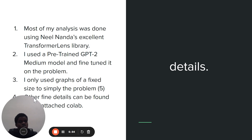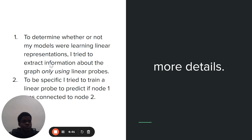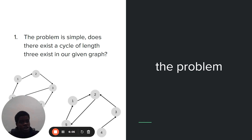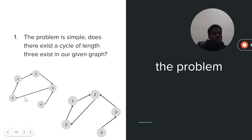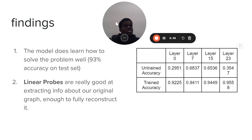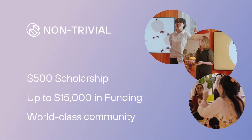Here are some details — you can check these out in my document or view more in my Colab. The specific problem I trained on was optimized for simplicity while still being a graph problem: given some graph, does there exist a cycle of length three? A cycle is just some loop of nodes. We find that the model does learn how to solve the problem well — it achieves 93% accuracy on the test set, and linear probes are actually good at extracting information about the original graph. There's a lot more to do. Thank you for listening.